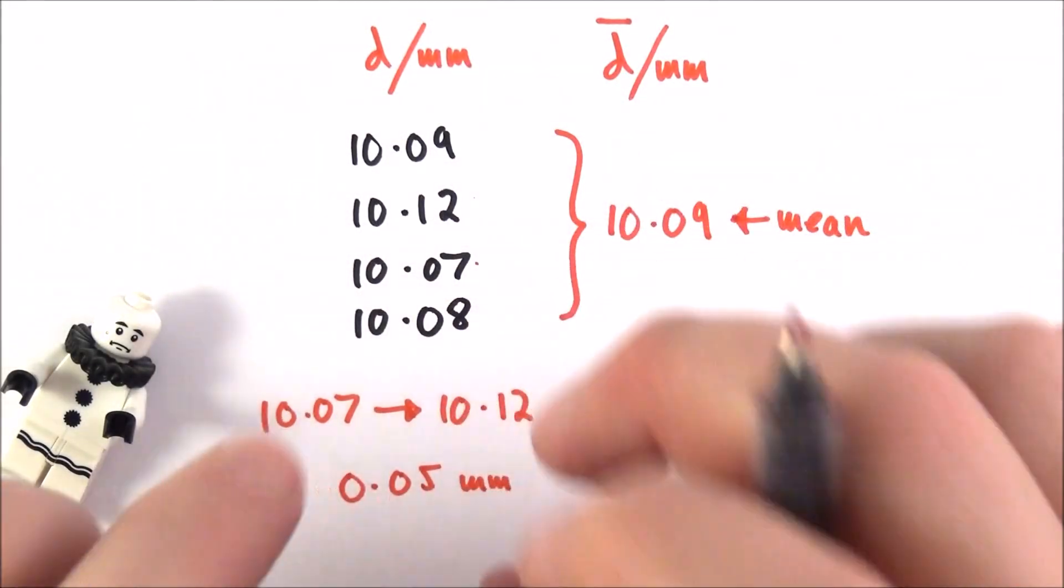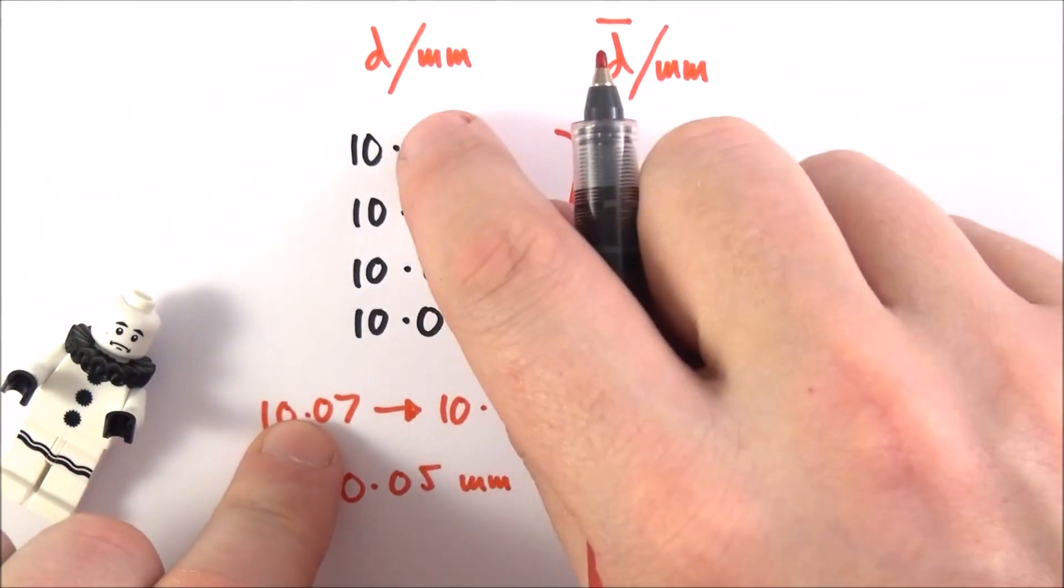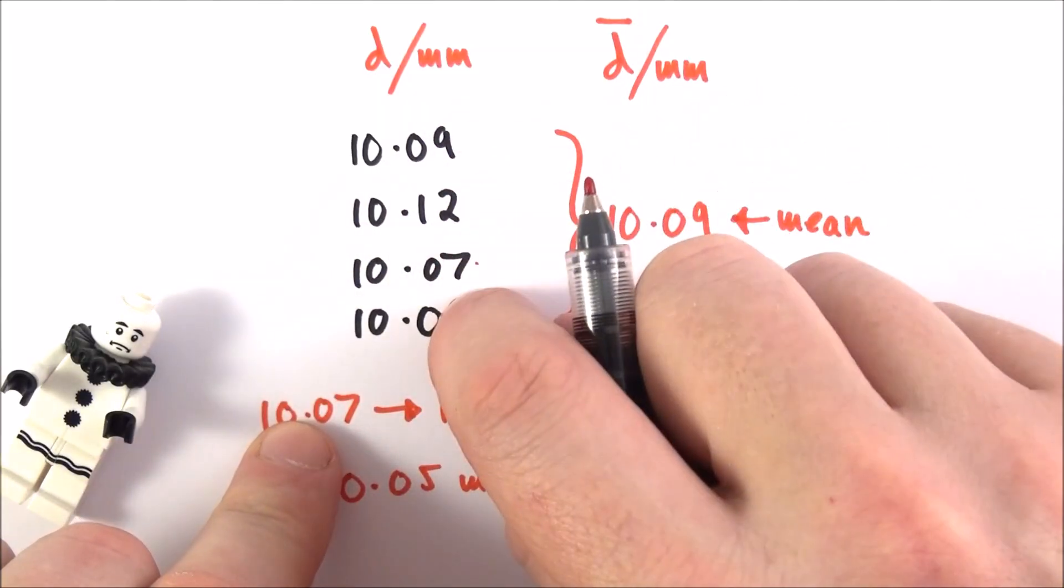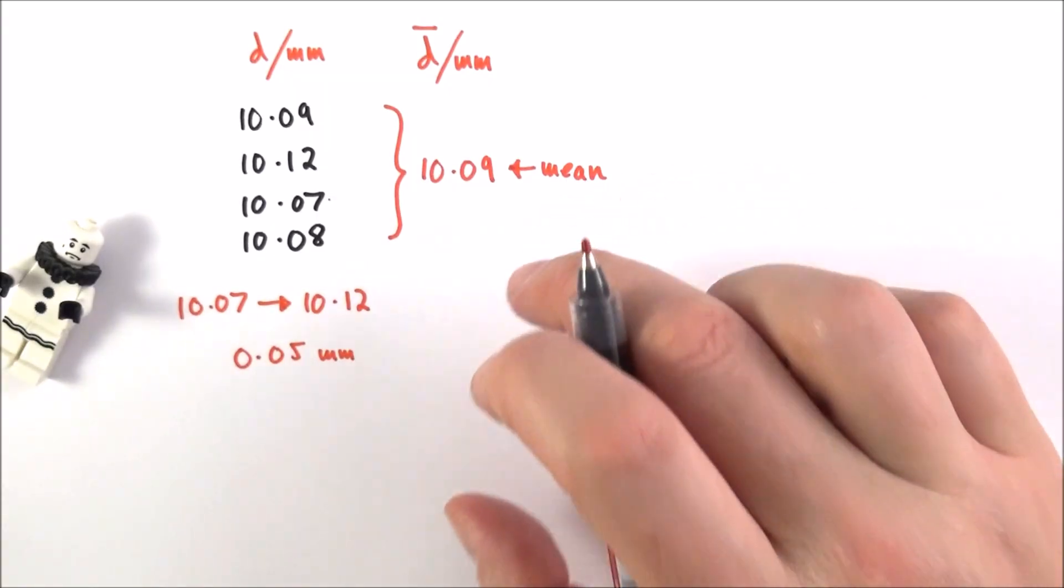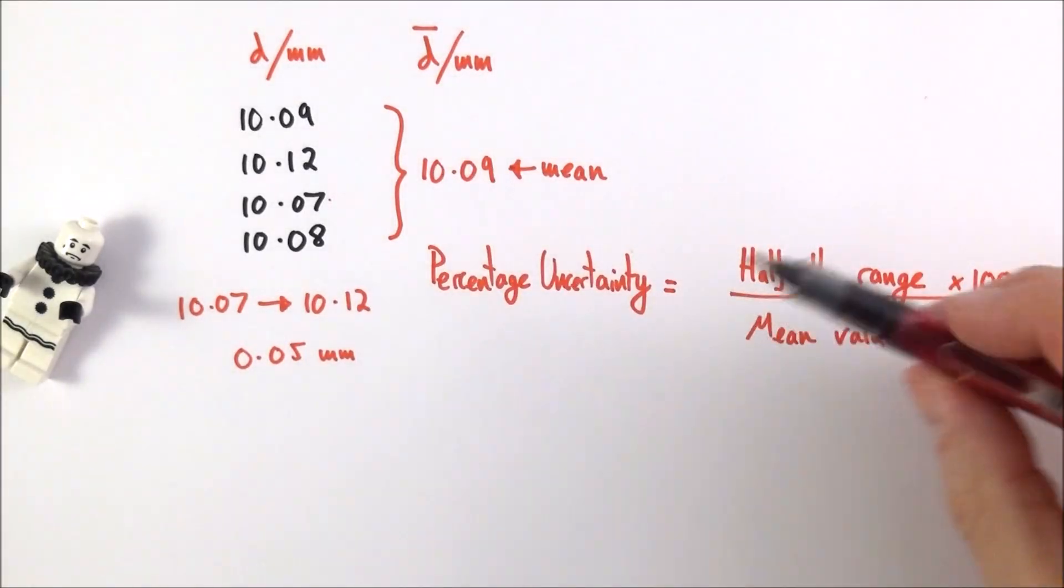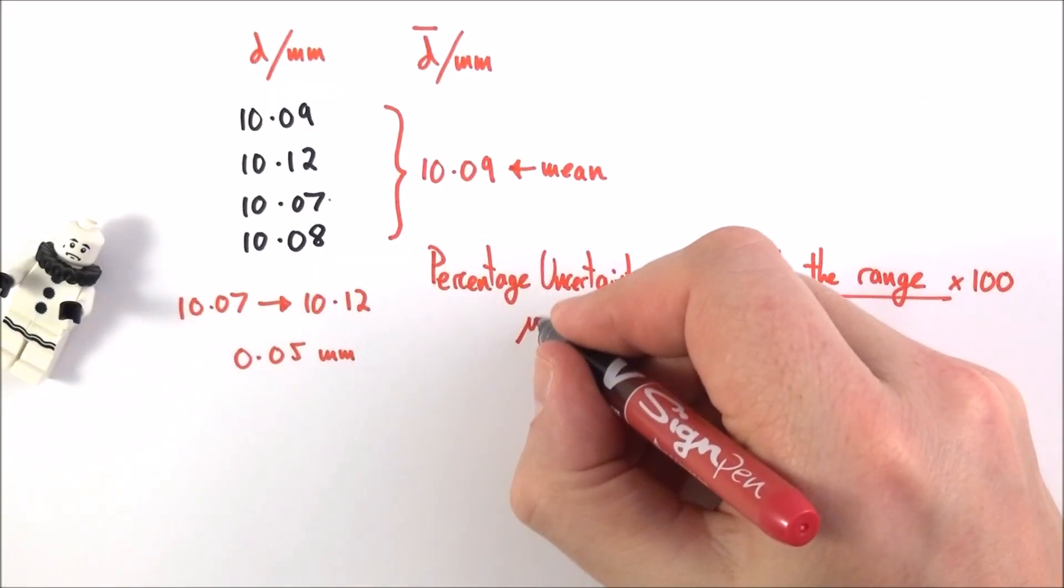And what we can look at is the percentage uncertainty for when we have multiple values that we've recorded. And in order to work out this percentage uncertainty, we need the following equation.